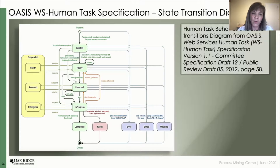Here we see the OASIS Human Task Specification Standard State Transition Diagram. OASIS is the Organization for the Advancement of Structured Information Standards — a non-profit international consortium that drives the development, convergence, and adoption of open standards for the Global Information Society.